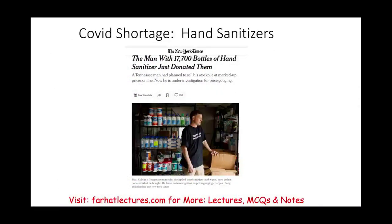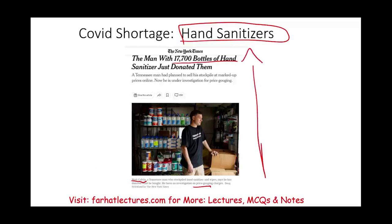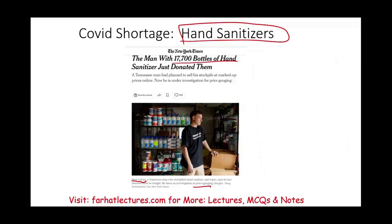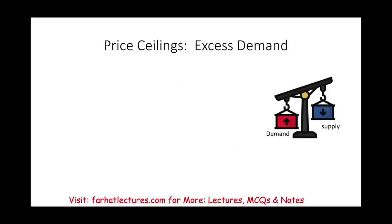Another example from COVID is the hand sanitizer shortage. One man from Tennessee, Matt Colvin, who was an Amazon seller, stockpiled almost 18,000 bottles of hand sanitizers and was selling them at a premium. The state of Tennessee intervened because they have rules against price gouging and forced him to lower his prices. He eventually donated them to his church. The point is, this is an example of a shortage caused by some event — the demand for hand sanitizers went up, the supply stayed the same. Eventually supply caught up with demand, but early on during COVID we had more demand than supply.